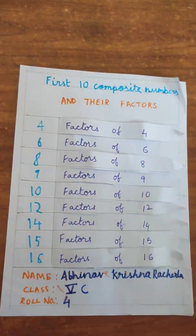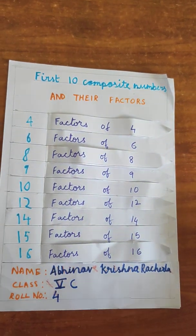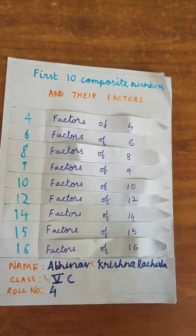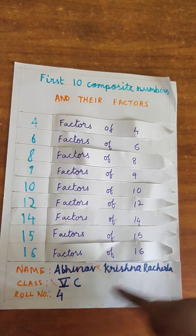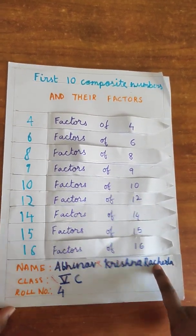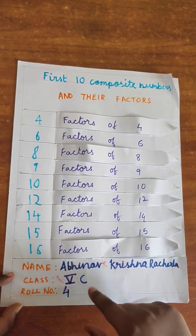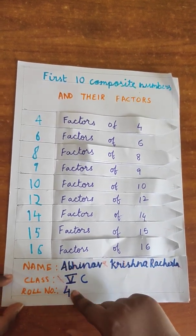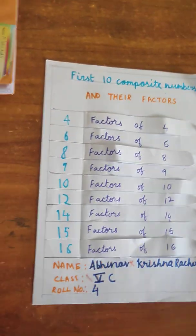Say like if you liked it. Subscribe if you want to make it. Now, my name is Abhinav Krishna Rajala, class 5, section C, and roll number 4. Thank you. Bye-bye.